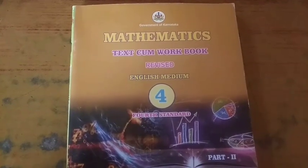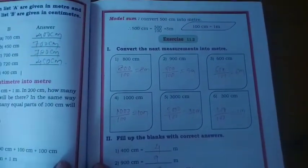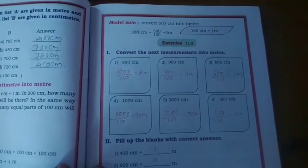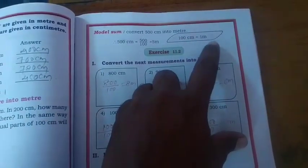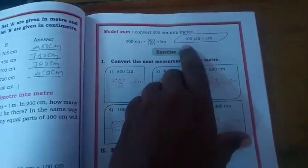Hi students. Today let us come to exercise 11.2. Convert the next measurements into meters. Already you know that 100 cm is equal to 1 m, or 1 m is equal to 100 cm.